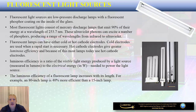The next type of light source is fluorescent light sources. These types of light sources do not use a thermal effect; they use a chemical effect to produce light. We are talking about low-pressure discharge lamps with a fluorescent phosphor coating on the inside of the glass. Most fluorescent lights consist of mercury discharge lamps that emit 90% of their energy at a wavelength of 253.7 nanometers in the ultraviolet range. The ultraviolet photons excite phosphors, which start producing the bright white light we see.